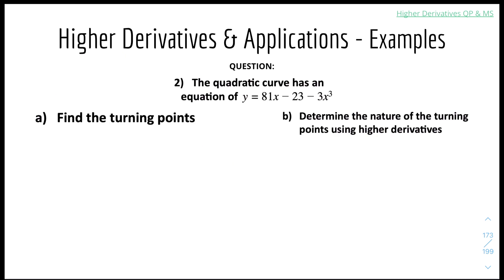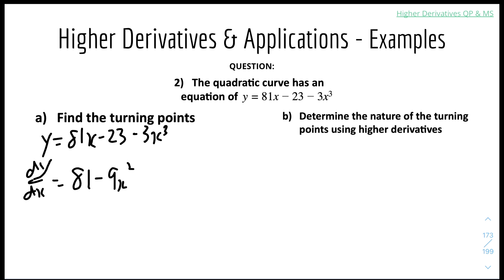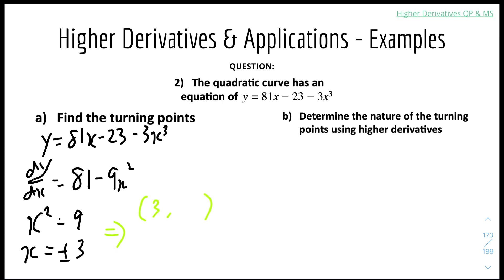The next example: the quadratic curve has equation y = 81x - 23 - 3x³. Find the turning points. Differentiating gives dy/dx = 81 - 9x². Solving: x² = 9, so x = ±3. Substituting x = 3 into the original equation: 81(3) - 23 - 3(3)³ = 139, giving point (3, 139). The other point will be (-3, -139). These are the two turning points.